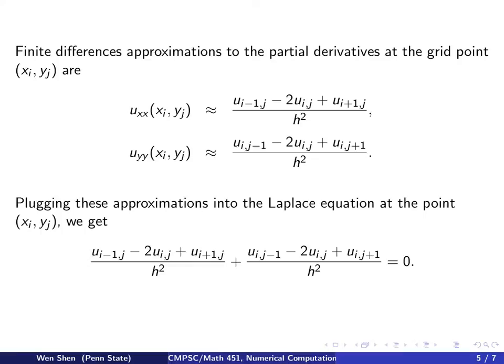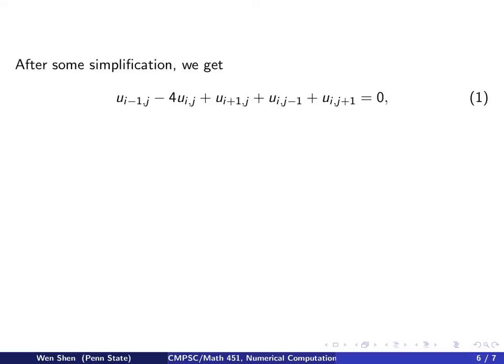We can now plug these two approximations back into the Laplace equation, and we get the following. Simply put this one here and this one here, add them up, and set them to be zero. One could now multiply both sides by h squared to get rid of the denominator and combine these two terms together. After some simplification, we get u_(i-1,j) minus 4u_(i,j) plus u_(i+1,j) plus u_(i,j-1) plus u_(i,j+1) equals zero. In front of u_ij, I get negative 4, and in front of all the other unknown values at the other grid points, I get 1.